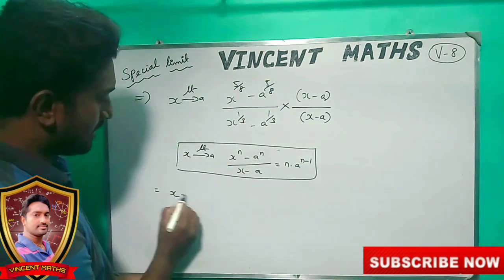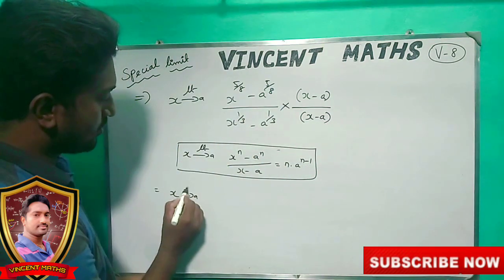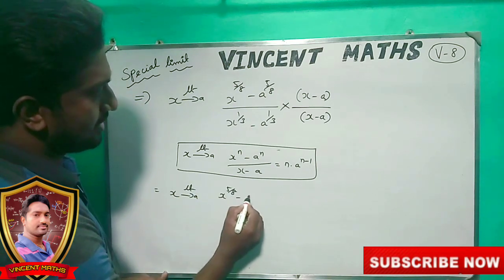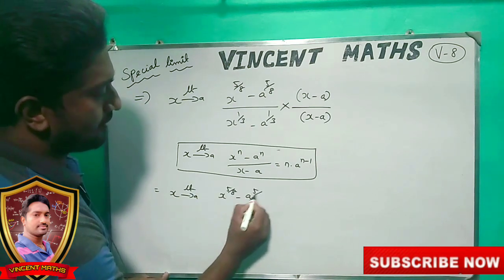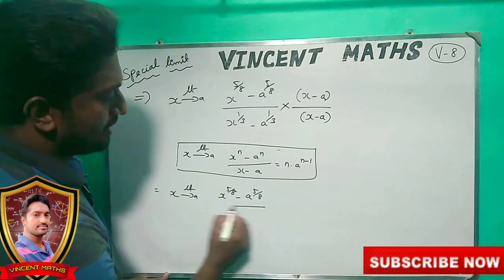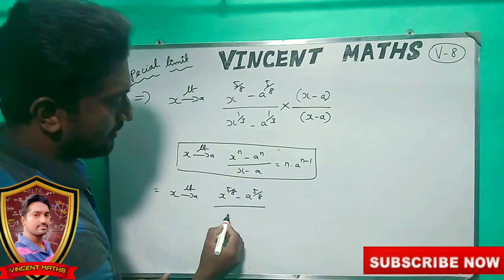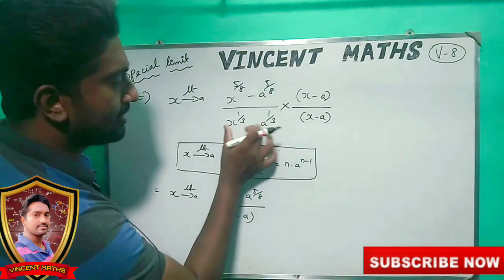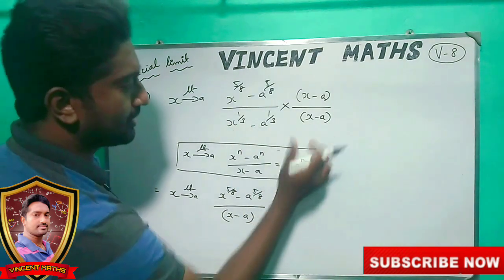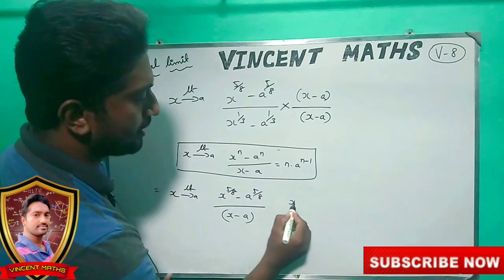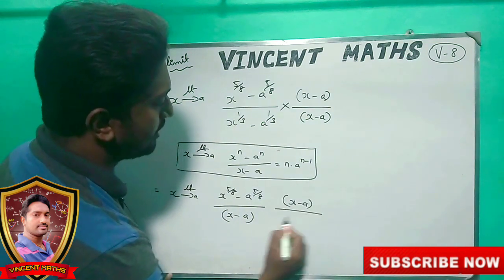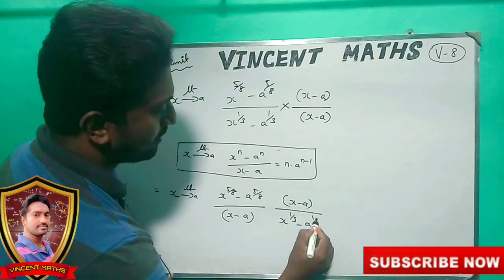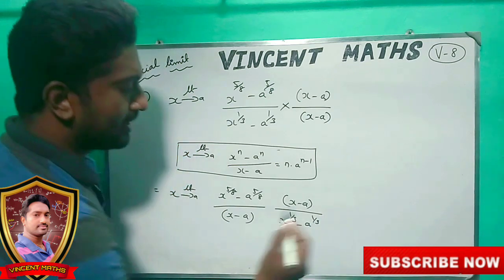Limit x goes to a: x power 5 by 8 minus a power 5 by 8. So, x minus a is here — x minus a. We will change this form. So, x minus a divided by x power 1 by 3 minus a power 1 by 3.